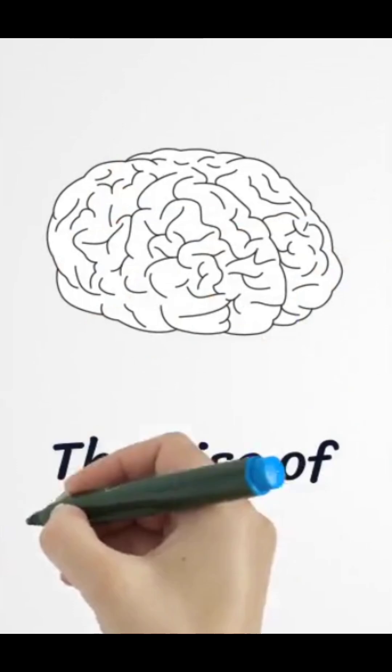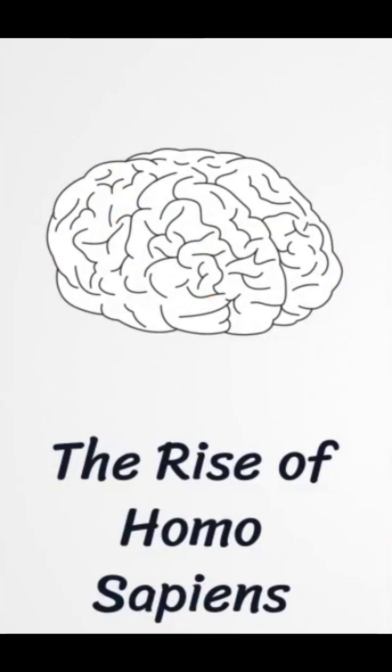About six million years ago, the human lineage split from chimpanzees, leading to the evolution of modern Homo sapiens.